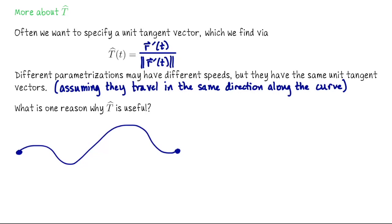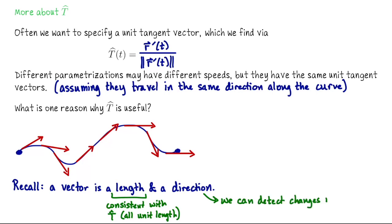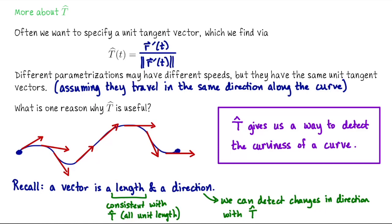Imagine drawing unit tangent vectors along this curve — all of these vectors are ideally length one. I've sketched some unit tangent vectors along this curve. Recall that a vector is a length and a sense of direction. By using these normalized tangent vectors, which all have a consistent length, changes in t-hat must correspond to changes in direction. Since they all have the same length, any change I pick up must correspond to a change in direction. So ultimately, t-hat is going to give us a way to detect the curviness of a curve. This notion actually has a name: it's curvature.